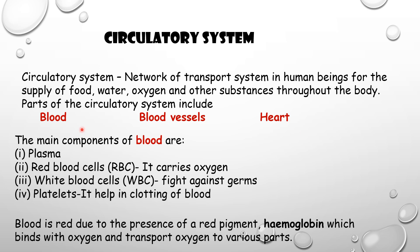First we will see blood. The main components of blood are plasma, red blood cells — or RBC — and white blood cells — or WBC. The function of RBC is to carry oxygen. The function of WBC is to fight against germs. Then there are platelets, whose function is to help in clotting of blood.